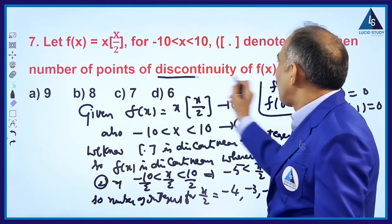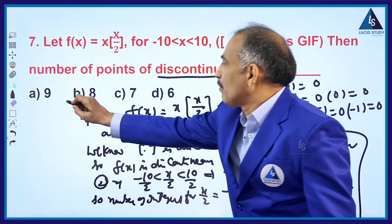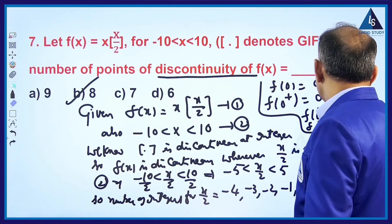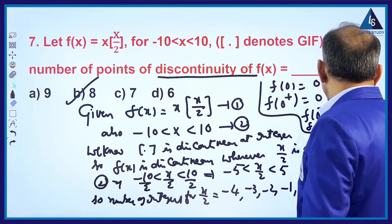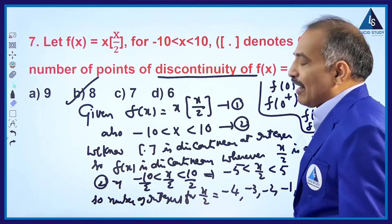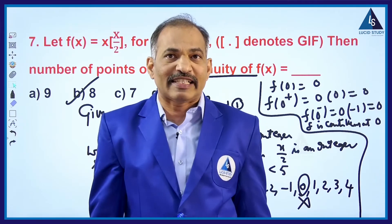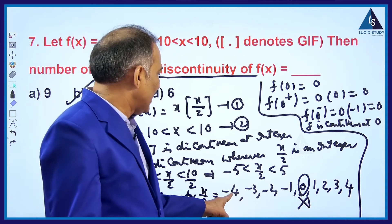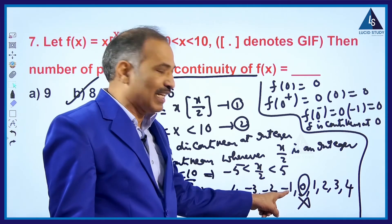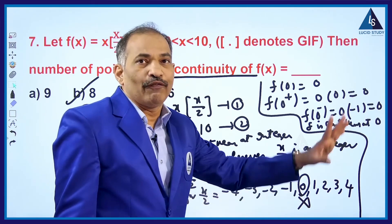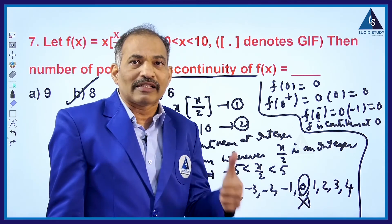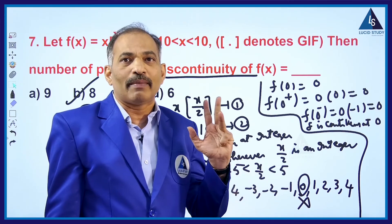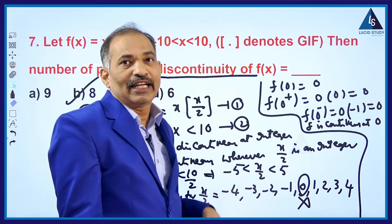Since f is asking for the number of points of discontinuity, and the function is continuous at x = 0, the number of points of discontinuity is 8. Those 8 points are: -4, -3, -2, -1, 1, 2, 3, 4 — that is, ±1, ±2, ±3, ±4. At 0, the function is continuous.